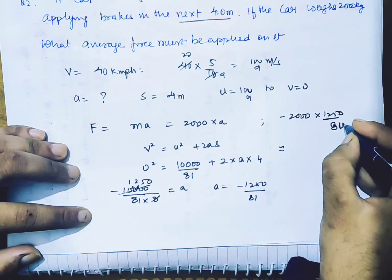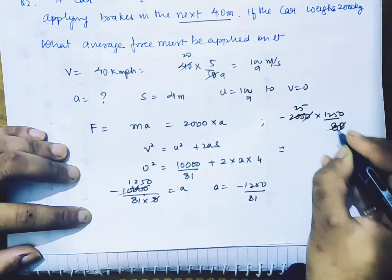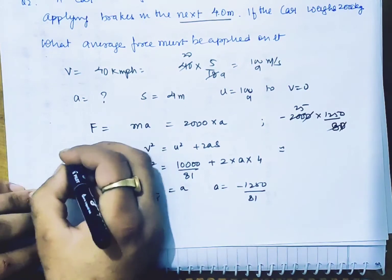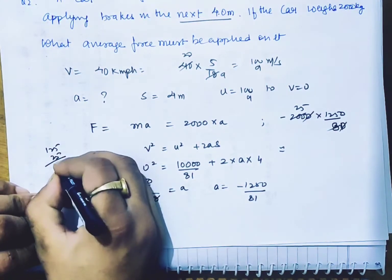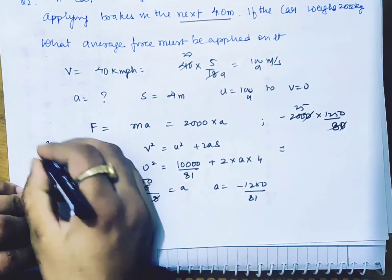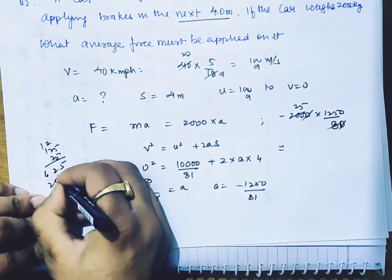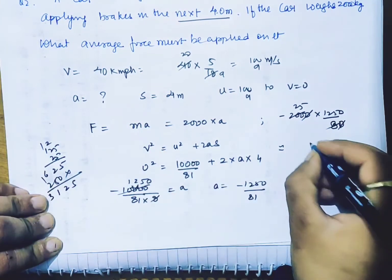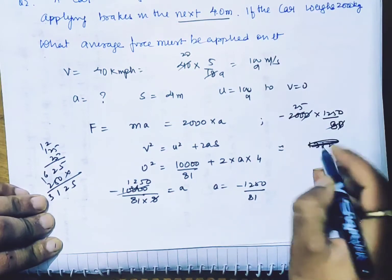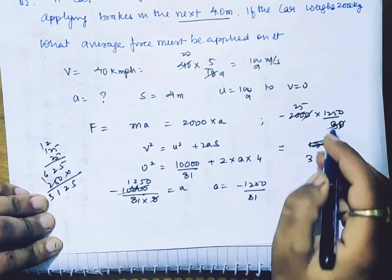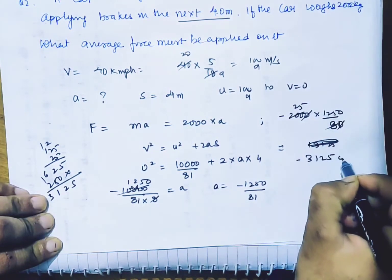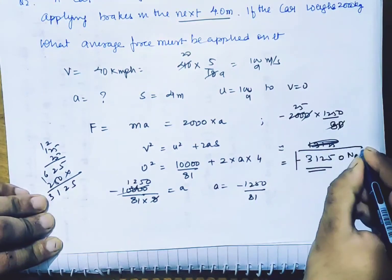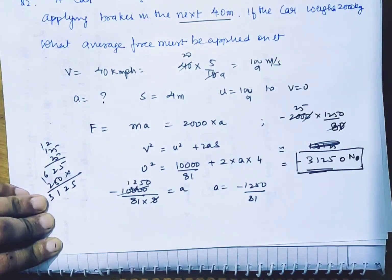If I take 80 to solve it, 125 into 25. 125 into 25 is how much? 125 into 25: 5 plus 25, 10 into 12, 625 into 50, that's 3125. So 3125 Newton force is needed to make the brakes work in 4 meters.